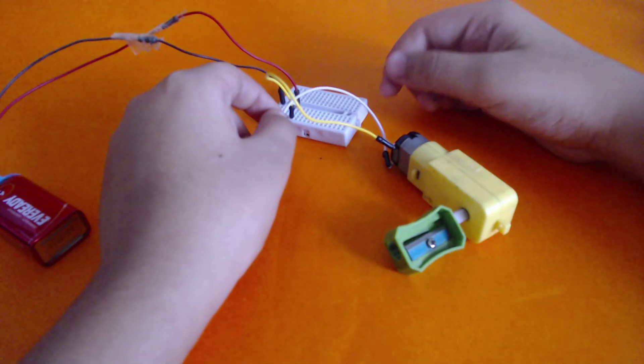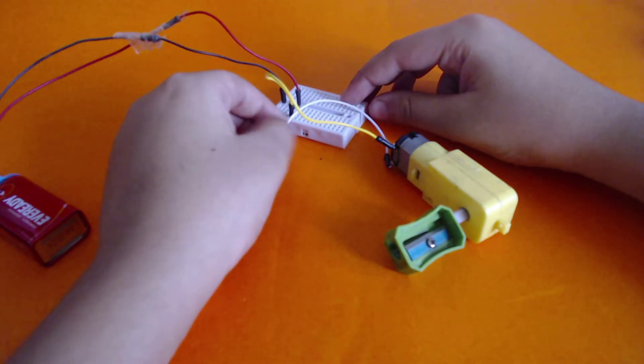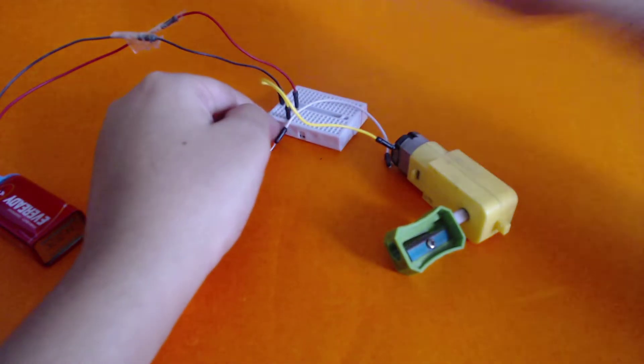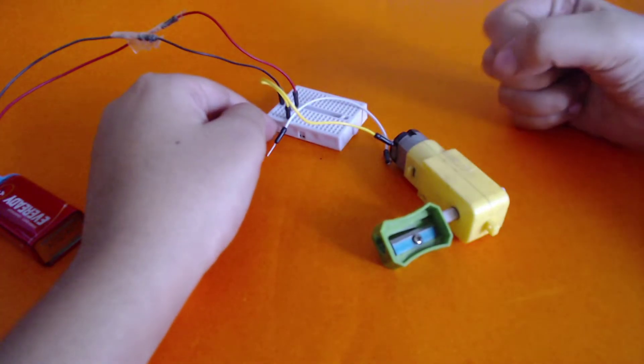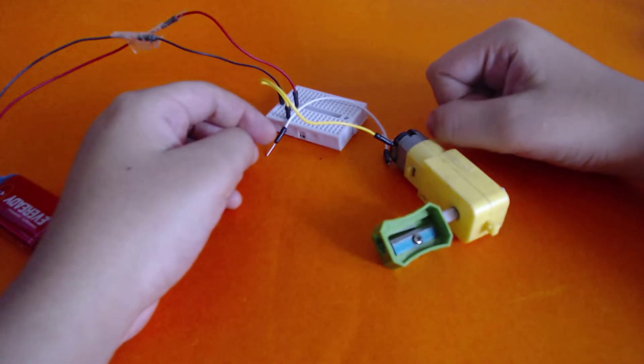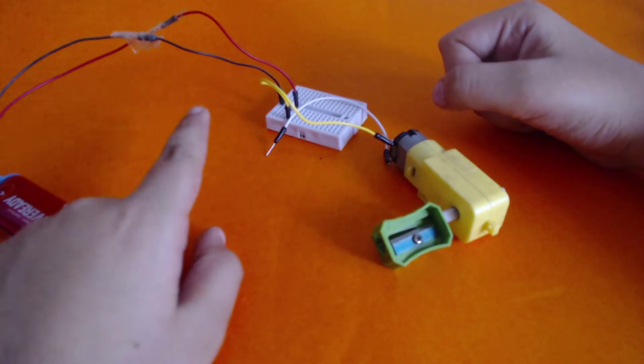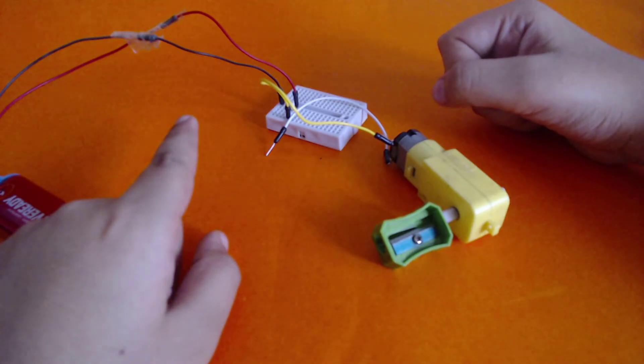After doing this, what we need to do is first we won't put one wire in because then the motor would keep rotating. Secondly, we'll need some cardboard to stick this onto. I'll be right back with you.